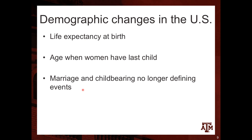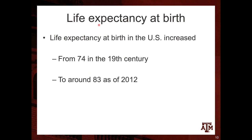In terms of life expectancy at birth, it increased a lot in the US over the last centuries — from around 74 years on average in the 19th century to 83 years on average based on data from 2012. This reflects a decline in mortality rates and improvements in health resources, health services, and health habits throughout this period.